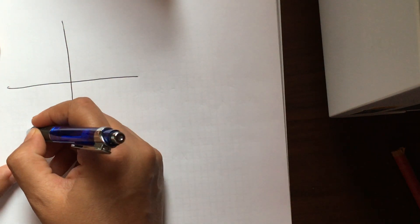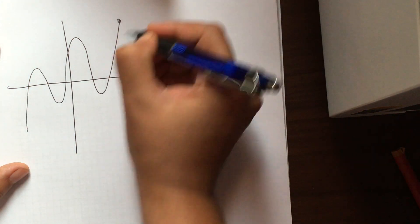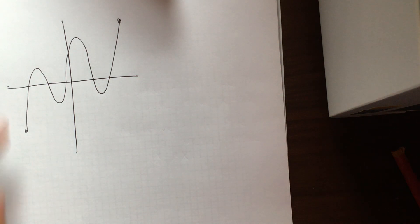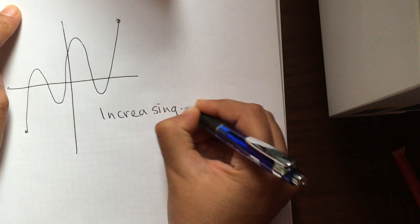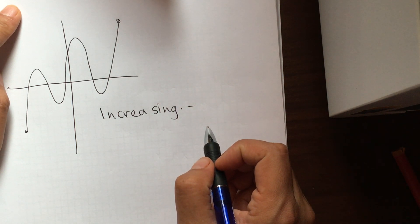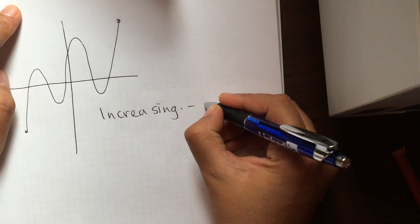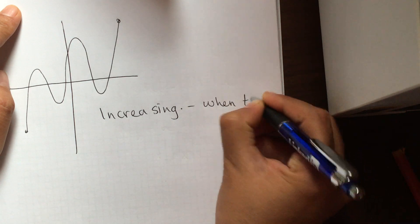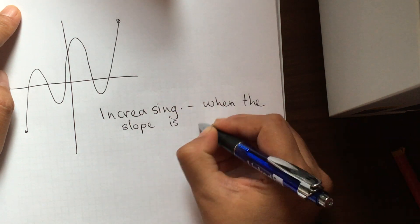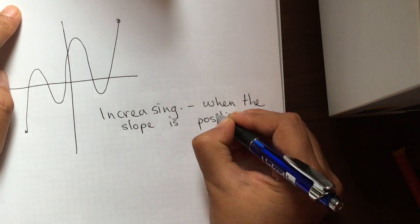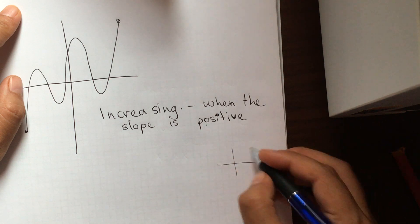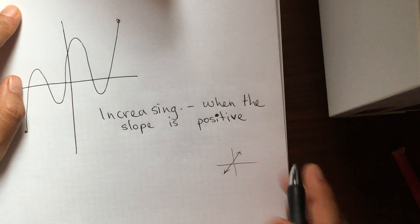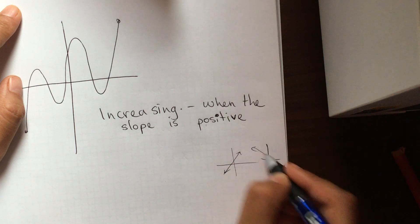For this lesson we also need to know when the graph is increasing, and that would be when the slope is positive. When the slope is positive — if you recall from previous levels — the slope is positive if the line goes up, and negative if the line goes down.